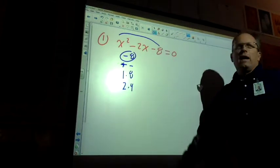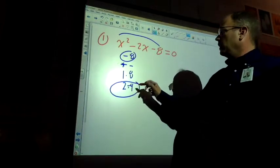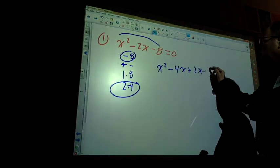Which of those work that add up to negative two? Two and four. Which one has to be negative? Four. Okay? So then you have x squared minus four x plus two x minus eight.